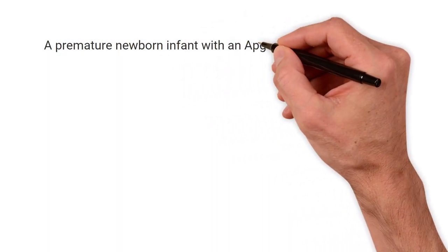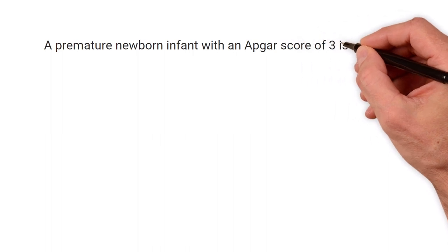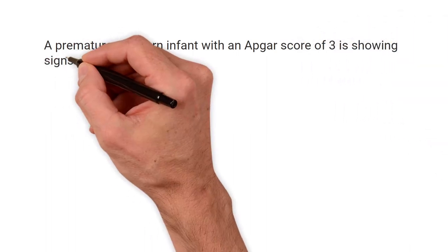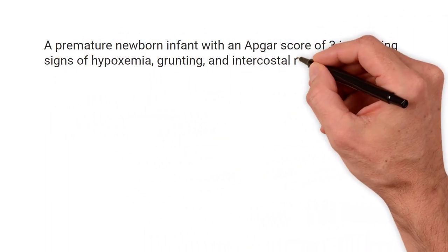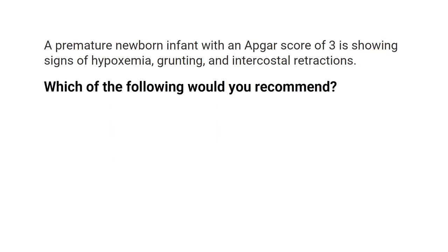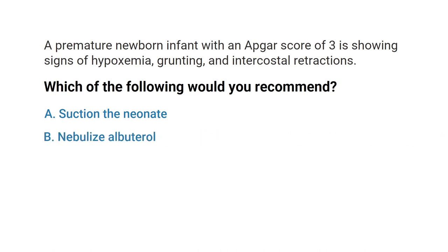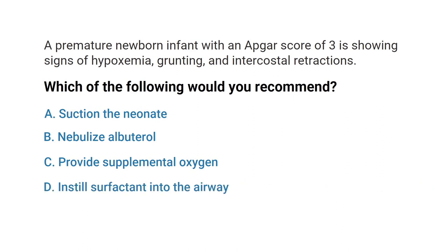A premature newborn infant with an Apgar score of three is showing signs of hypoxemia, grunting, and intercostal retractions. Which of the following would you recommend? A) Suction the neonate, B) Nebulize albuterol, C) Provide supplemental oxygen, or D) Instill surfactant into the airway.